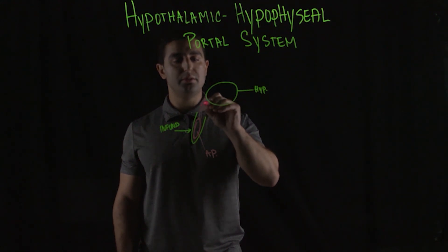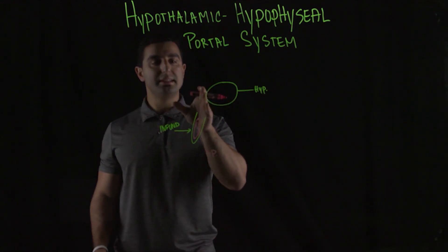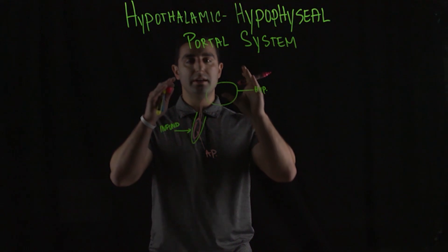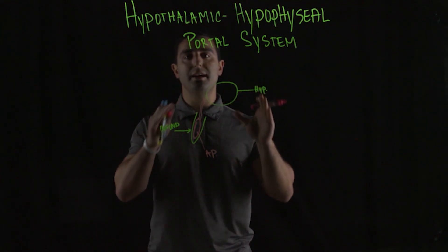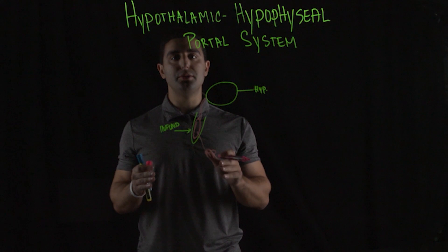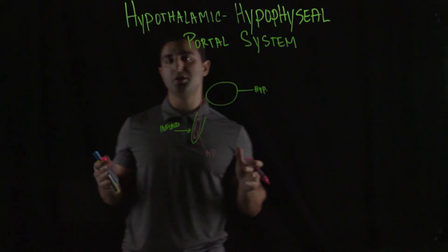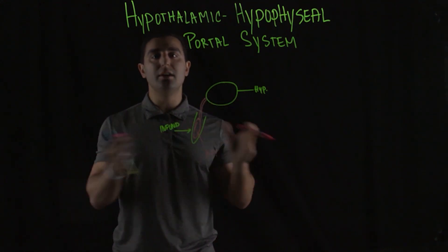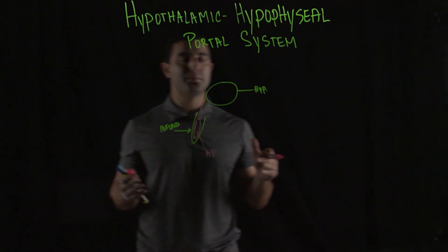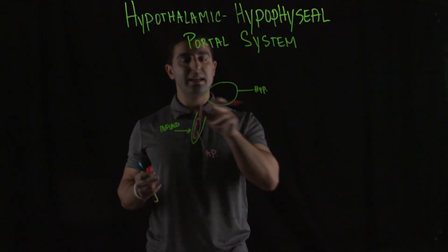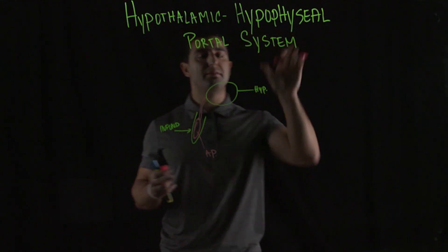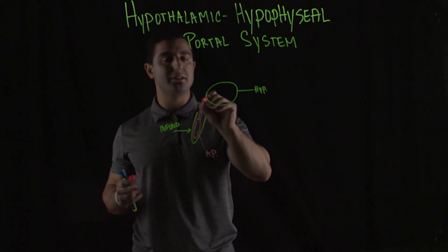It's this little portal system where these capillaries allow for high concentration of hypothalamic hormones to enter the anterior pituitary system in order to bind to these trophic cells and cause a very high response. The reason for this is if this hypothalamic hypophyseal portal system was not created, so you didn't have this...